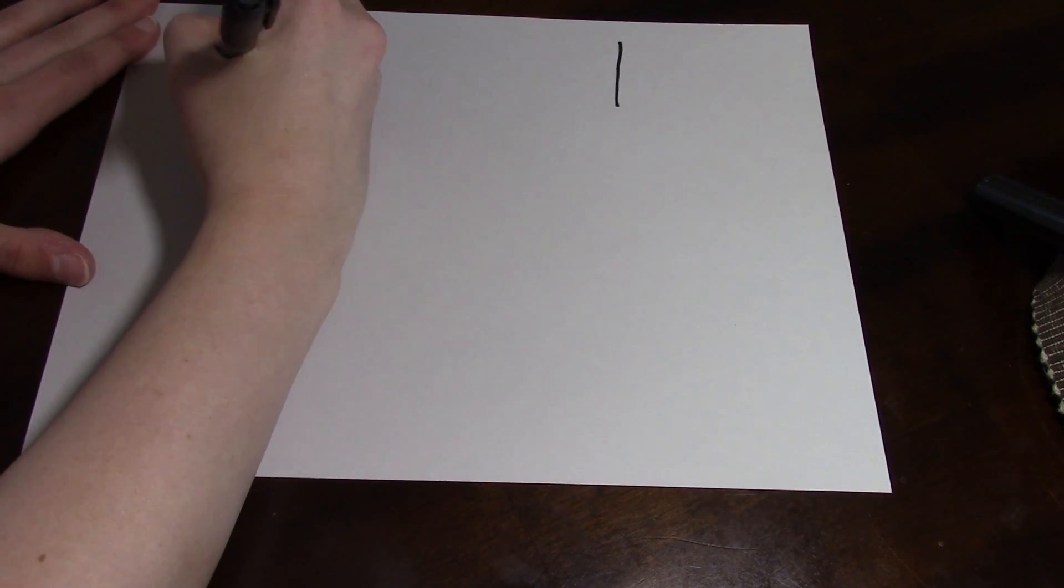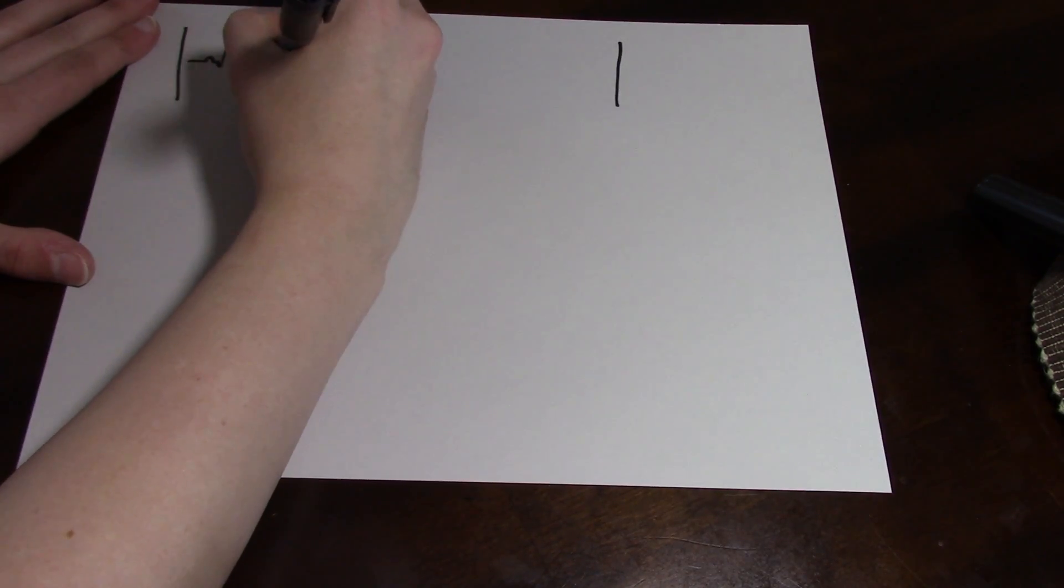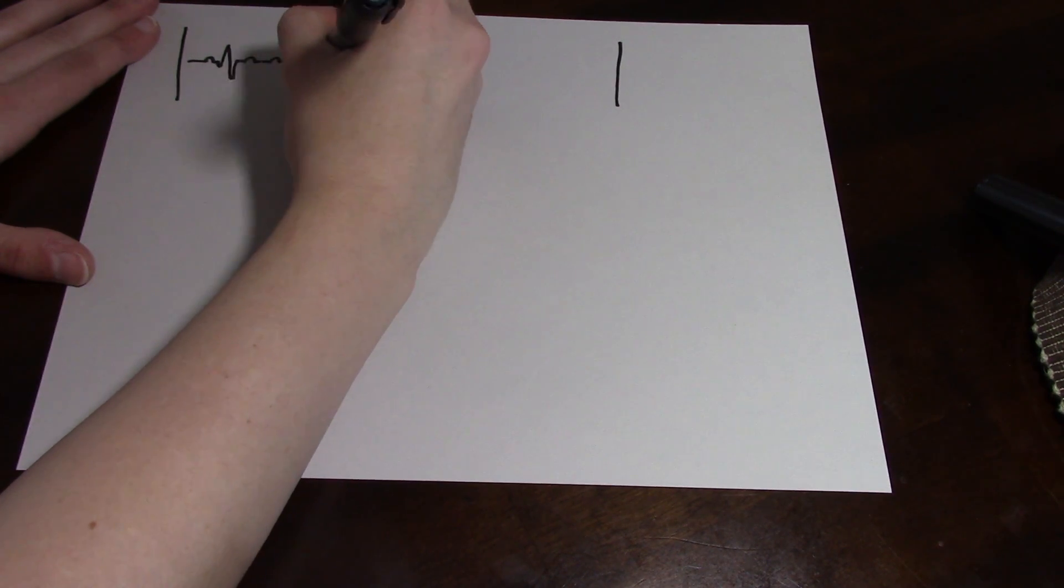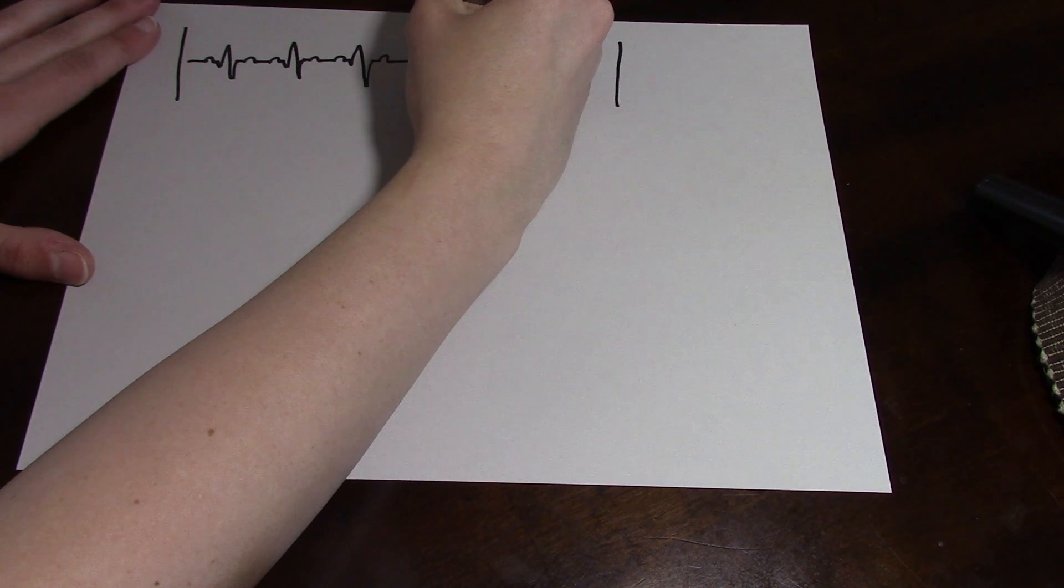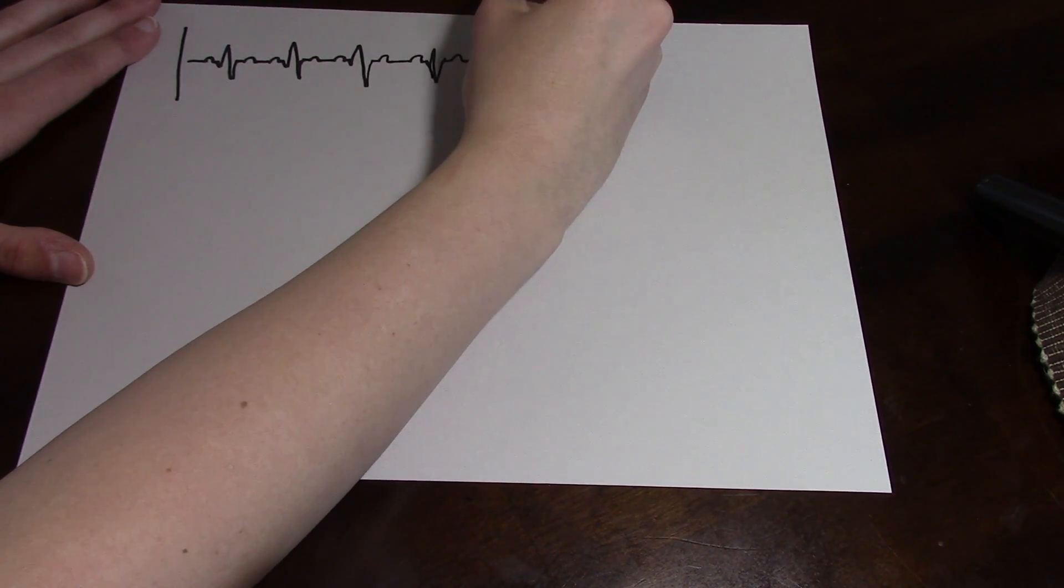Before we begin, it's important to know that when you're measuring how fast a rate of a heart rhythm is going, typically it's measured on a six second strip. And there's two ways that you can measure how fast this rhythm is going.